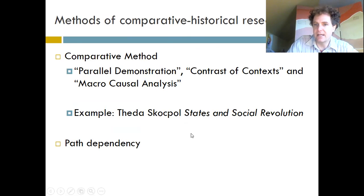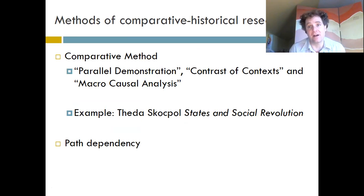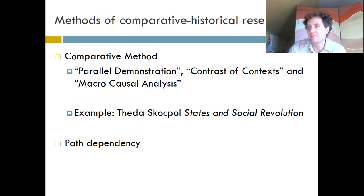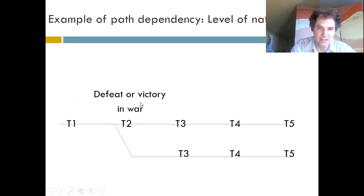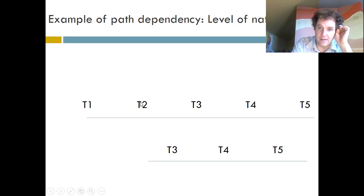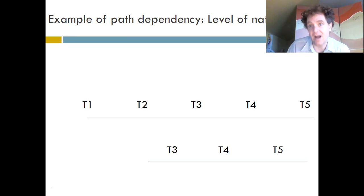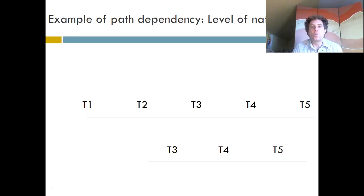The second method is what's called path dependency. Path dependency is also comparative, but it's more about looking at how things change incrementally over time. What you're going to do is follow society from time one to time two, time three — let's say 10 years or 100 years each increment — and see what makes two societies different. You're comparing them, but with path dependency you want to track them over time.